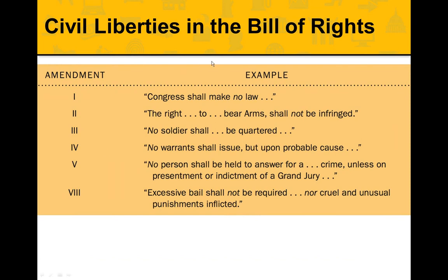The civil liberties in the Bill of Rights: the First Amendment covers expression — Congress shall make no law. The Second Amendment: the right to bear arms shall not be infringed. The Third Amendment: no soldier shall be quartered. The Fourth Amendment: no warrant shall issue without cause. The Fifth Amendment: no person shall be held for a crime without going through the grand jury process. The Eighth Amendment: excessive bail shall not be required, nor cruel and unusual punishment. All those 'no's and 'not's are your clue that civil liberties are only realized when government is not doing something to you.